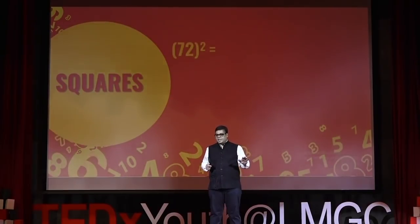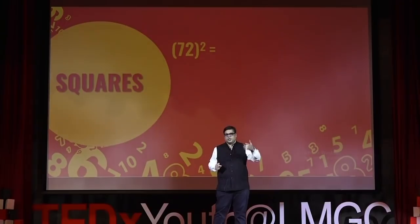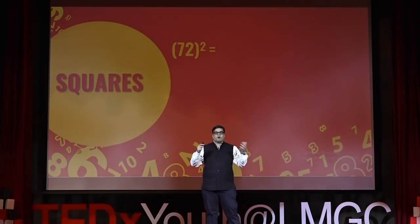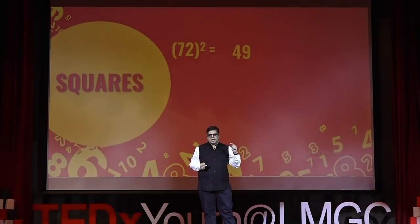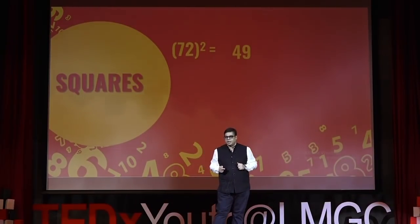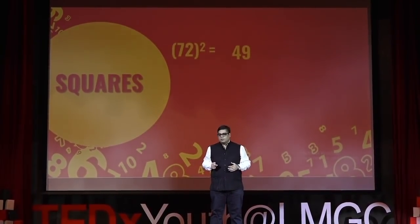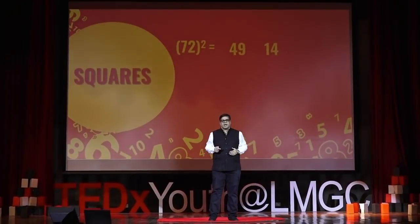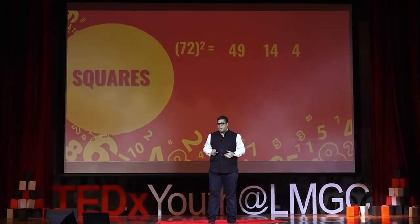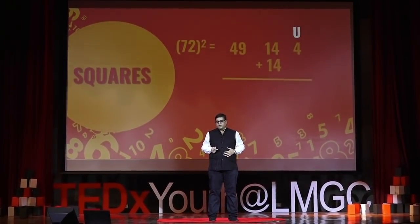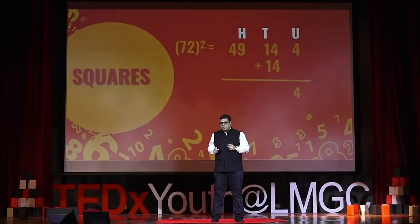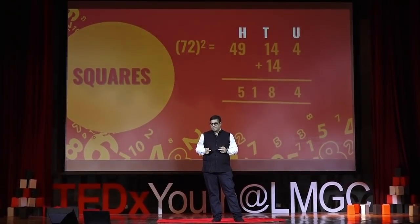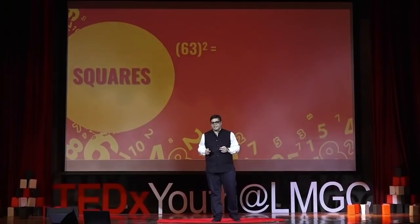Let's try 72². Here a = 7, b = 2. 7² = 49. Multiply by B/a = 2/7, so 49 × (2/7) = 14. Multiply again by 2/7: 14 × (2/7) = 4. Copy 14 down and add. Units column: 4. Tens: 14 + 14 = 28, so 8 comes down, 2 carried. Hundreds: 49 + 2 = 51. The answer is 5184.